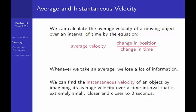To find the instantaneous velocity, we imagine taking the average velocity over smaller and smaller and smaller intervals. The smaller the interval in general, the more accurate your average is.